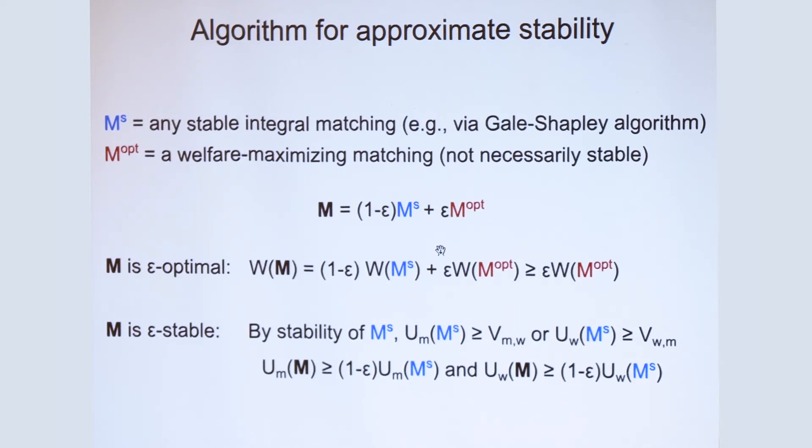So MS is stable. For every pair, at least one of the agents meets the utility threshold. And when we scale the welfare by one minus epsilon, the same happens with the one minus scaling over here, which is exactly the epsilon stability condition.